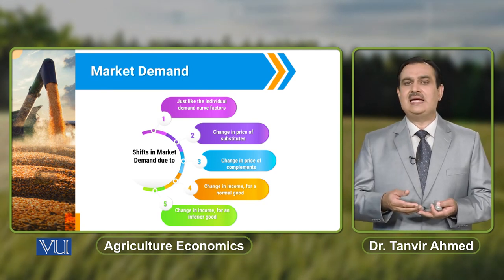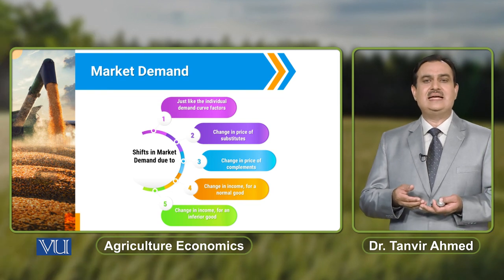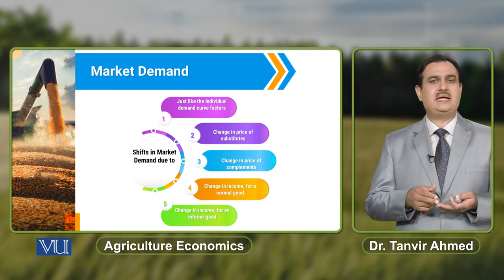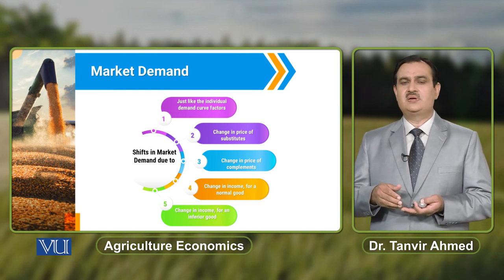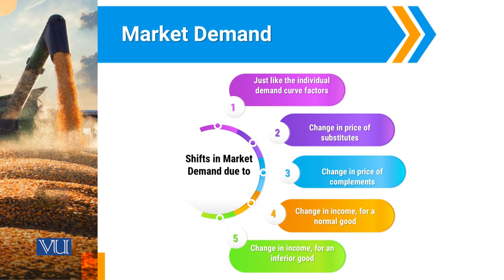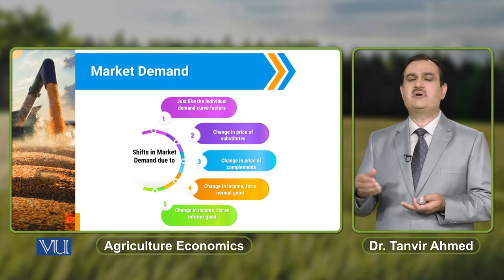It might also be possible that there is a change in income in the market — a change in income of all the individuals in a particular market, maybe because of taxation. Because of that imposition of taxation, when there is a decrease in disposable income of consumers, it results in a decrease in demand for that particular commodity. We observe this positive association between income and demand when the commodity under consideration is a normal commodity. If income increases, demand will increase for a normal good. But if the commodity is an inferior commodity, then an increase in income results in a decrease in demand for that particular commodity.